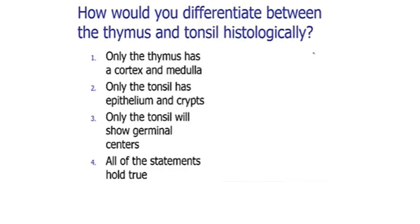To summarize the thymus: it has cortex and medulla; the tonsil has crypts (true); only the tonsil will show germinal centers — since the thymus doesn't have a germinal center, this is true. So all these statements are true regarding the differentiation between thymus and tonsil.